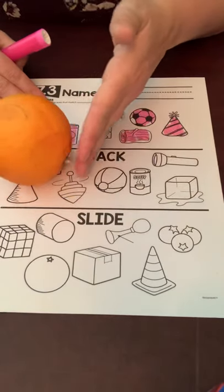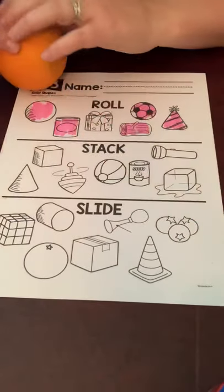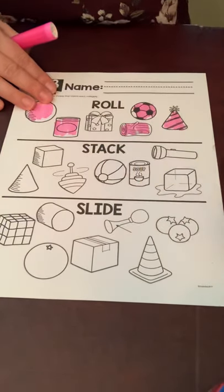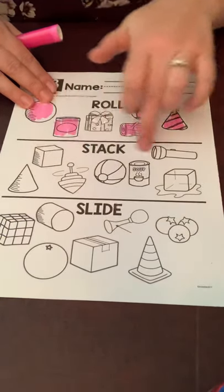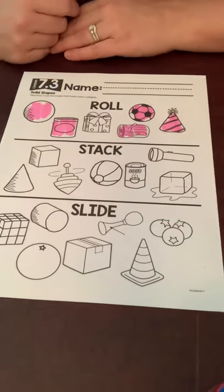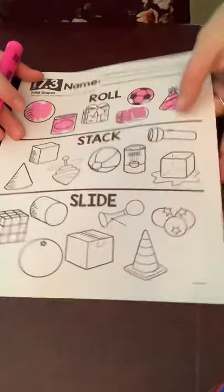Spheres don't—I mean we can slide it, but really they end up rolling before we can slide them, they roll. So anything that can slide, stack, or roll, you need to color. That's your first one about shapes.